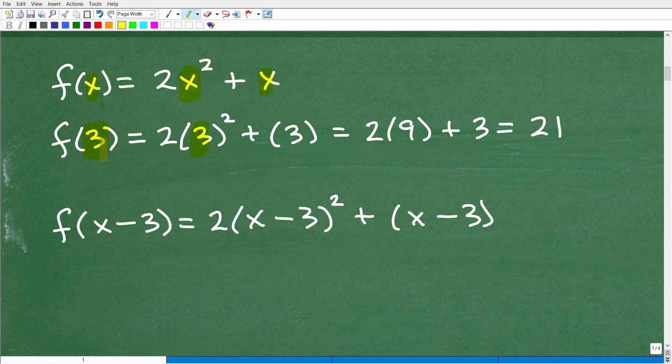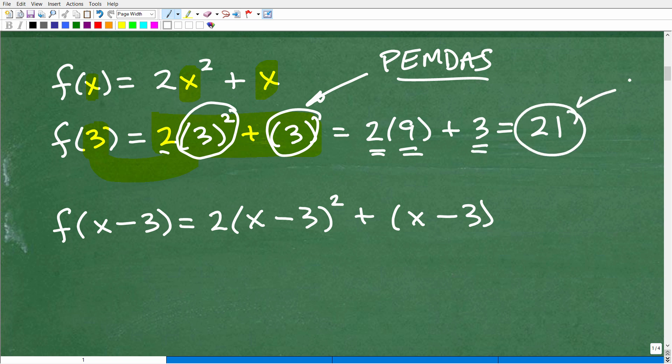So this x is going to become 3, and then this x here will plug in a 3. So now I have to figure out this expression, 2 times 3 squared plus 3. You've got to be very careful with the order of operations. Remember your PEMDAS. So what do we do first? We do powers, right? So 3 squared is 9. That's going to be 9 times 2. That's 18 plus this 3. 18 plus 3 is 21. So that is f of 3.